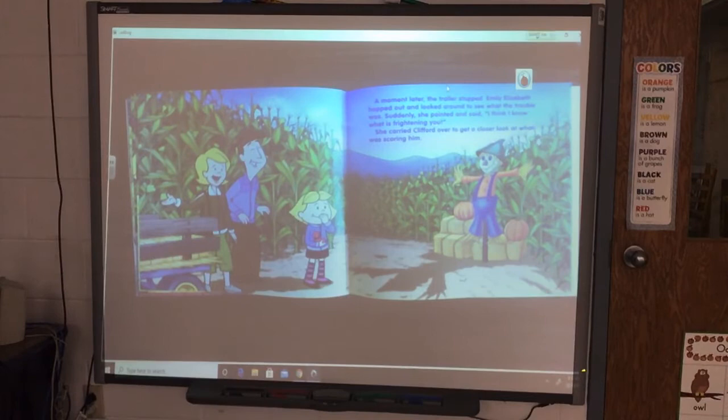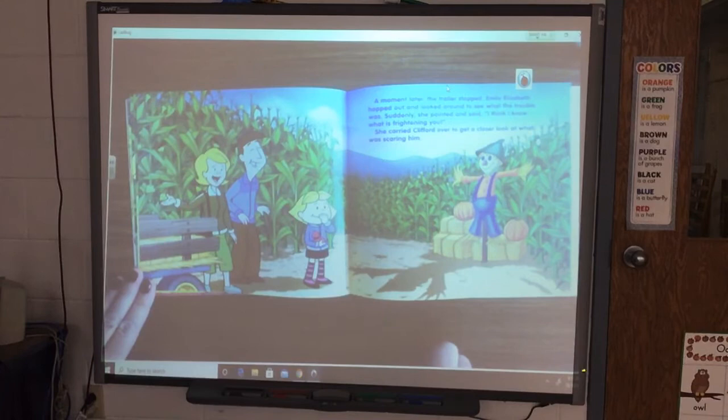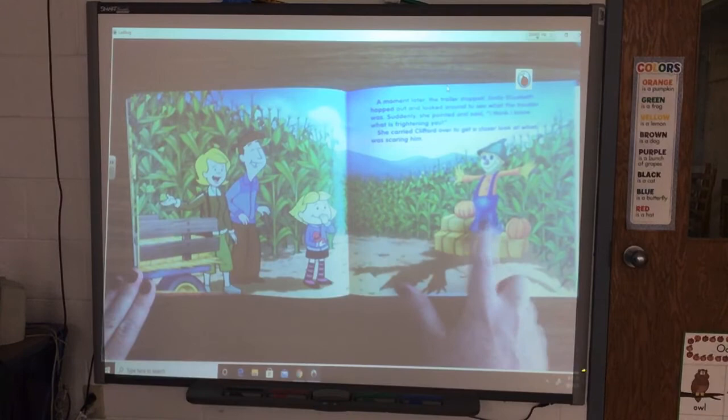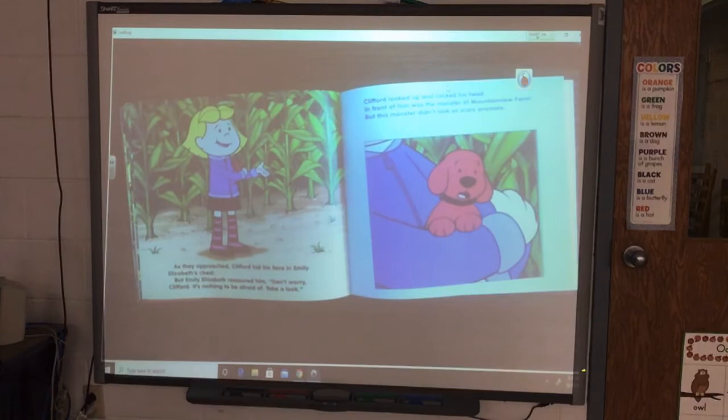Suddenly, she pointed and said, I think I know what is frightening you. She carried Clifford over to get a closer look at what was scaring him. That's what it was, boys and girls. As they approached, Clifford hid his face in Emily Elizabeth's chest. But Emily Elizabeth reassured him. Don't worry Clifford. It's nothing to be afraid of. Take a look.